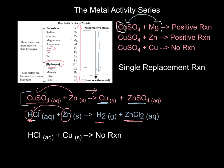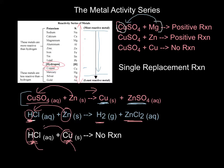Now let's look at the next example: hydrochloric acid reacting with copper — we did this in the lab. We find hydrogen on the chart, and copper is right below it. Hydrogen is more reactive than copper. Since our single element — copper — is less reactive than the element in the compound — hydrogen — copper will not come and replace hydrogen in the compound. Thus, we see no reaction.